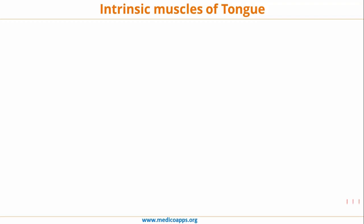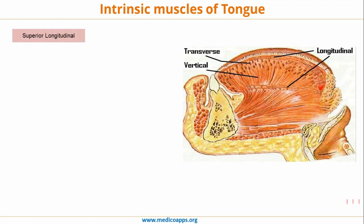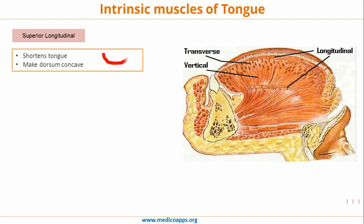Let's look at the intrinsic muscles of the tongue. This is a cross section of the tongue which will show all the intrinsic muscles. The first set is the superior longitudinal muscle. The longitudinal muscles run across the length of the tongue, so once they contract they will shorten the tongue. Superior longitudinal, because it is on the superior side of the tongue, will make the tongue shorter and will make the dorsum of the tongue concave, as shown in the diagram.